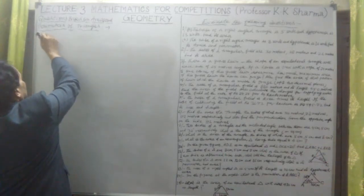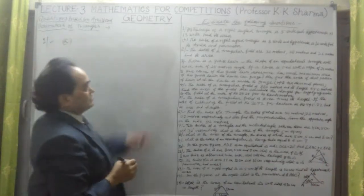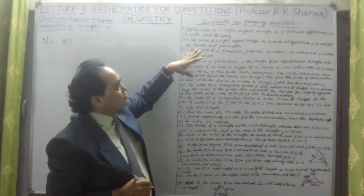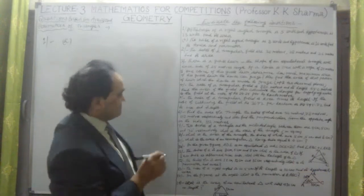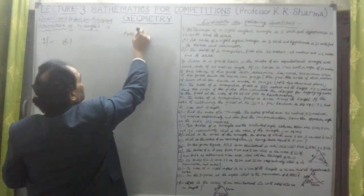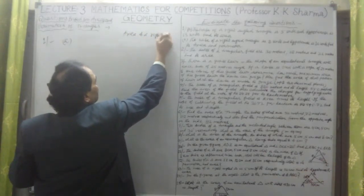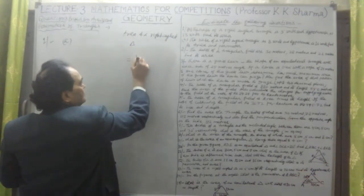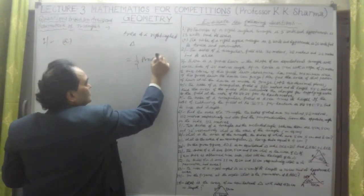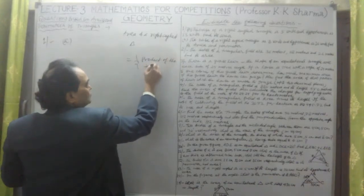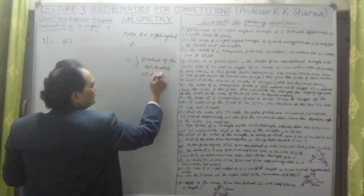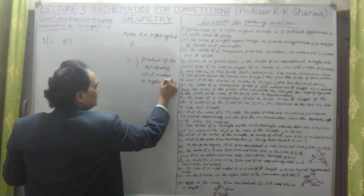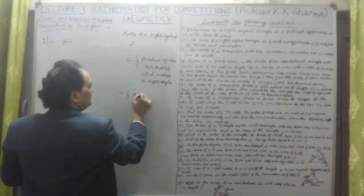Question number one has two parts, A and B. The first is about a right-angled triangle. The area of a right-angled triangle equals half times the product of the two sides which make the right angle — that is, half base into perpendicular. Since altitude is already the perpendicular in a right-angled triangle, we have area equals half base into height, in square units.